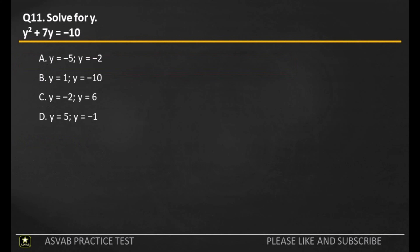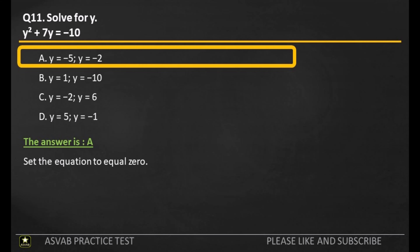Q11. Solve for Y. A: Y equals minus 5, Y equals minus 2. B: Y equals 1, Y equals minus 10. C: Y equals minus 2, Y equals 6. D: Y equals 5, Y equals minus 1. The answer is A. Set the equation equal to 0.